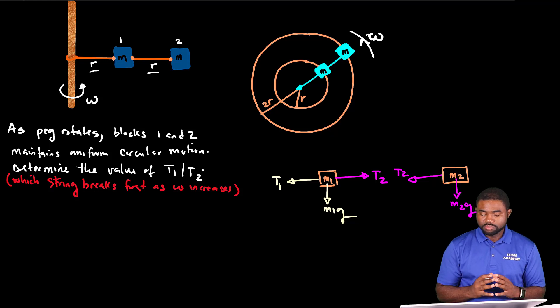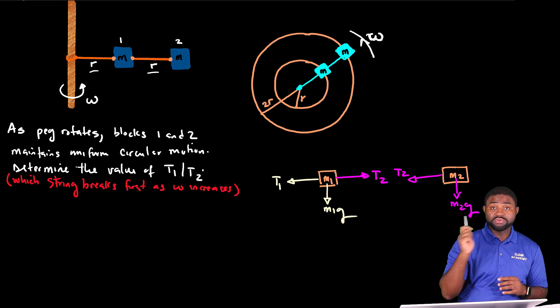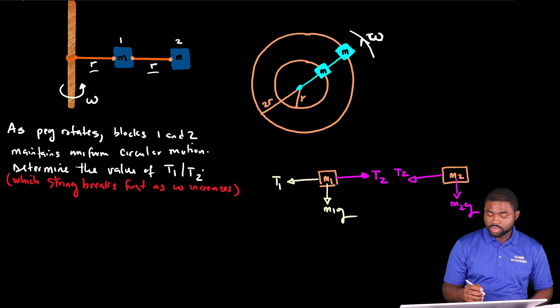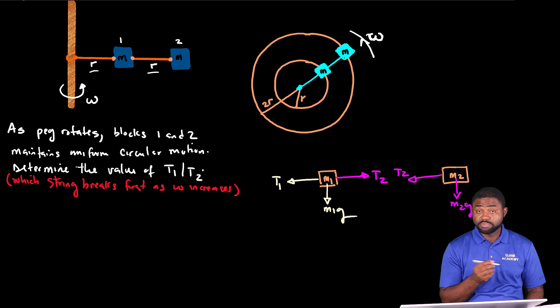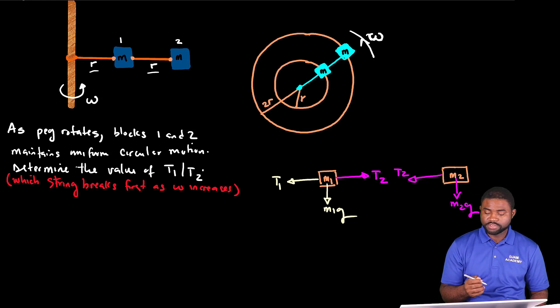Keep in mind that both systems maintain uniform circular motion which means that M1 and M2 has the same omega as they rotate around the peg. And that is quite helpful. And we are going to take the positive direction to be directed towards the peg or towards the center of the circle.